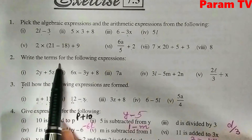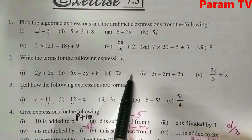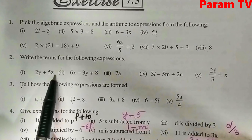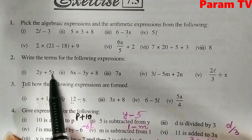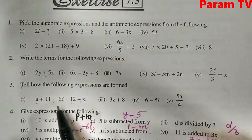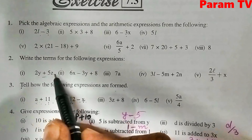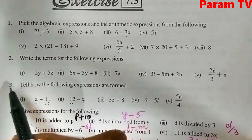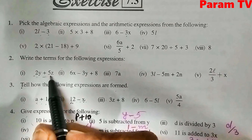Question number 2: write the terms for the following expressions. Look at your book. The first part is 2Y plus 5Z. See how many terms are involved — when a plus or minus sign appears, a new term begins. So 2Y is one term and 5Z is another term. There are two terms in this expression: 2Y and 5Z.